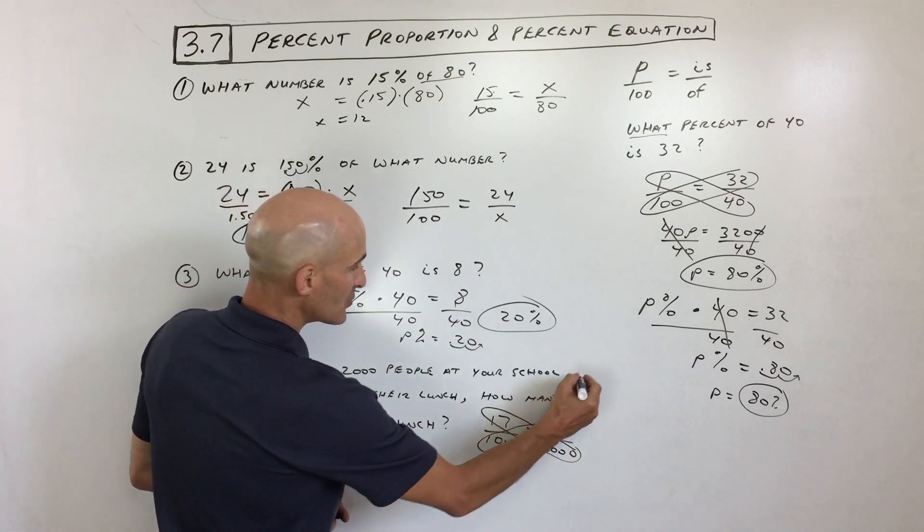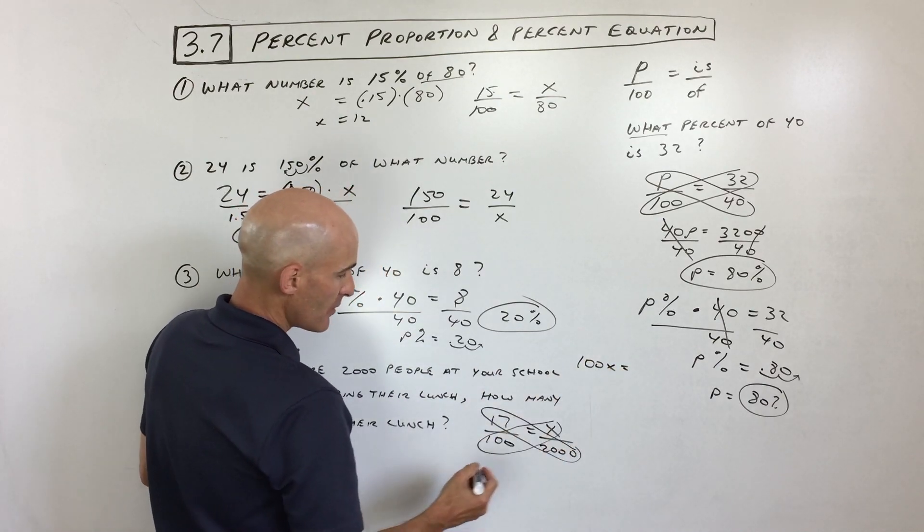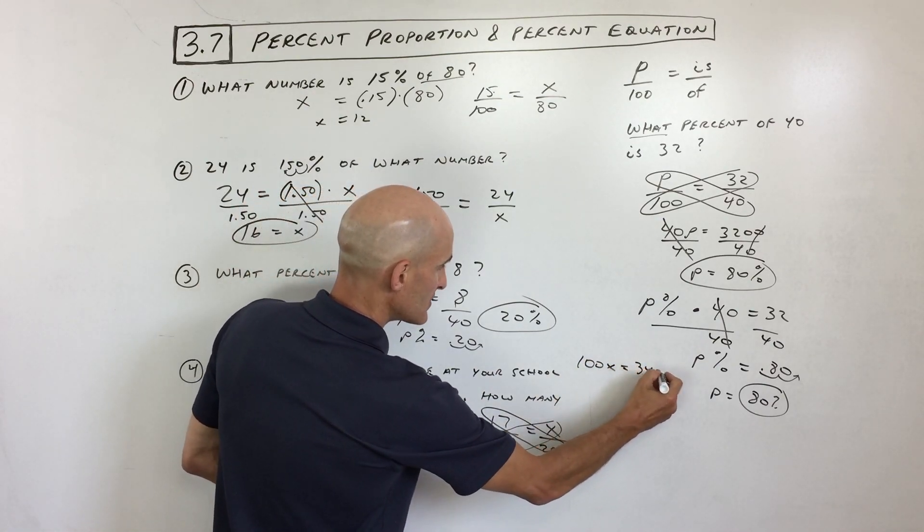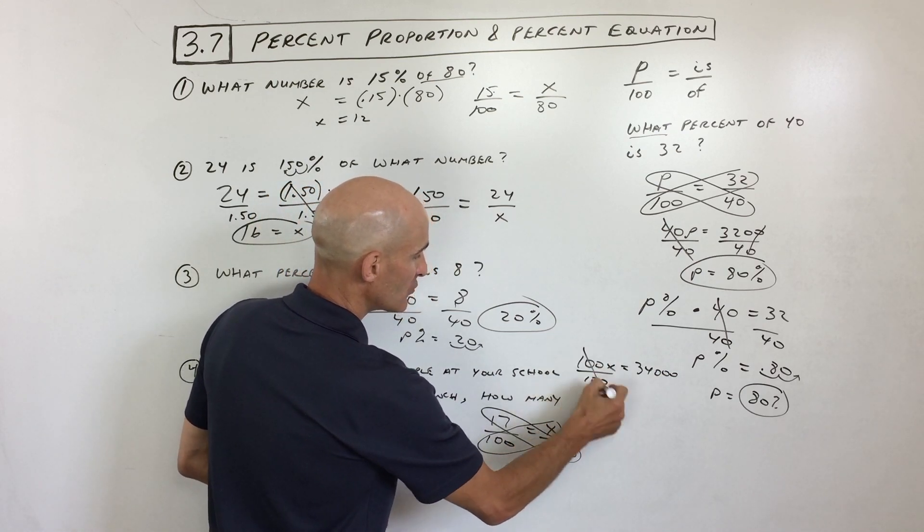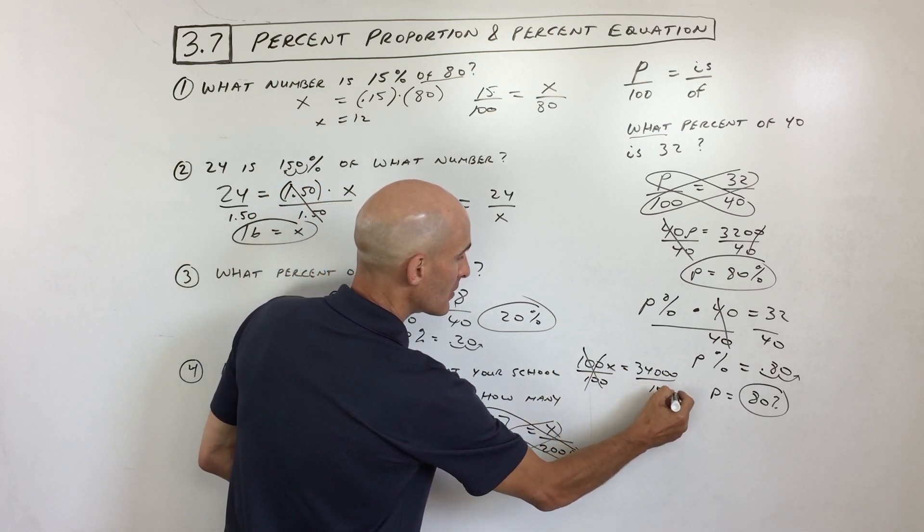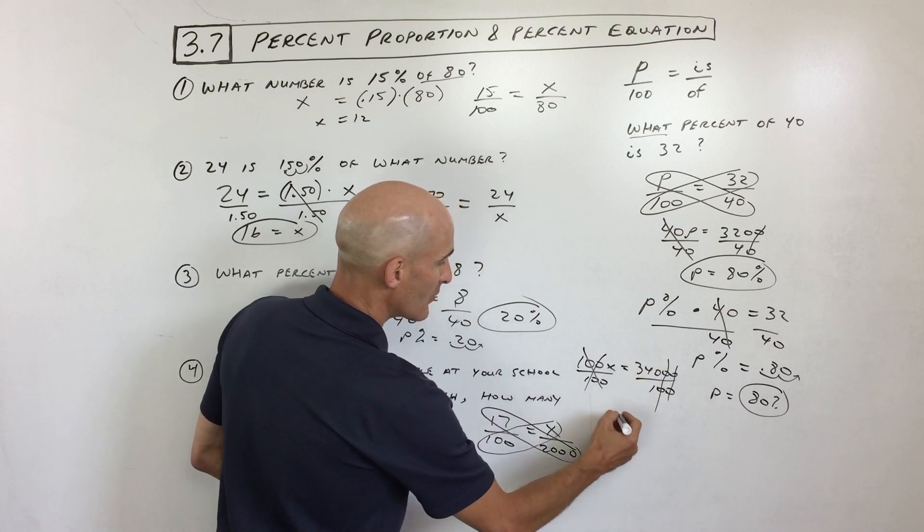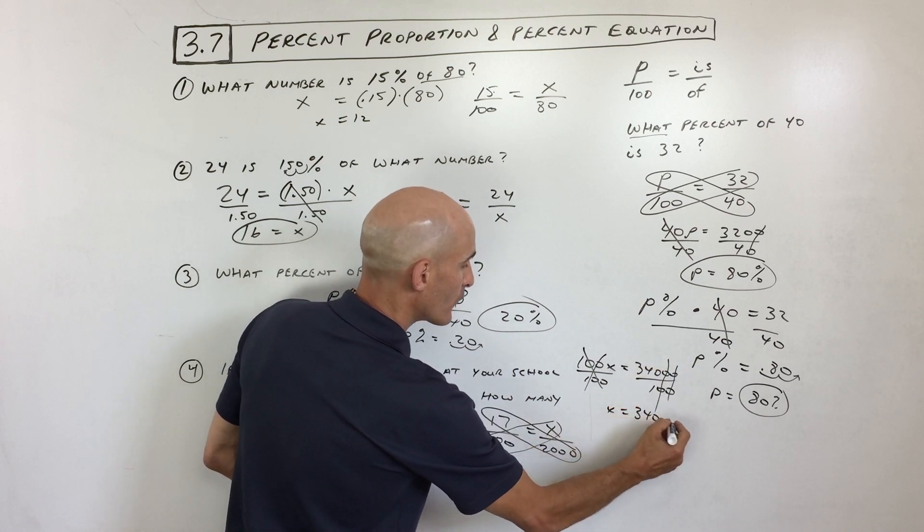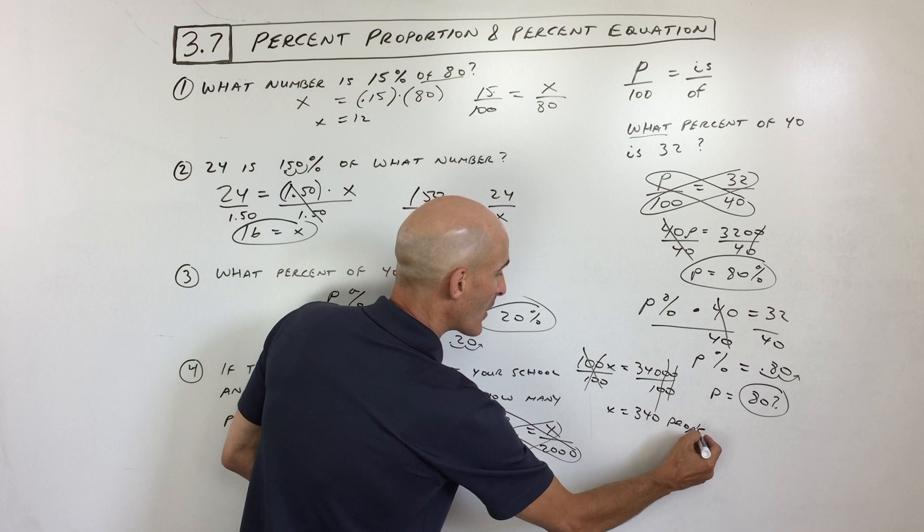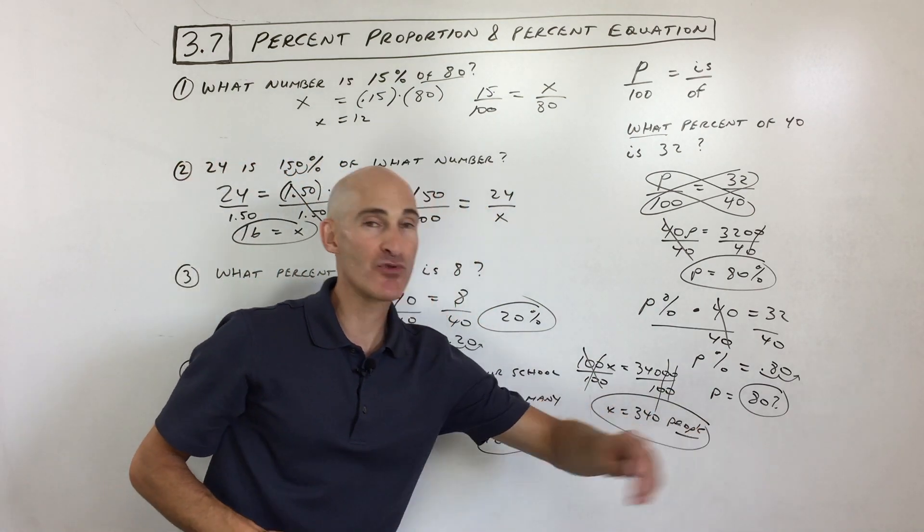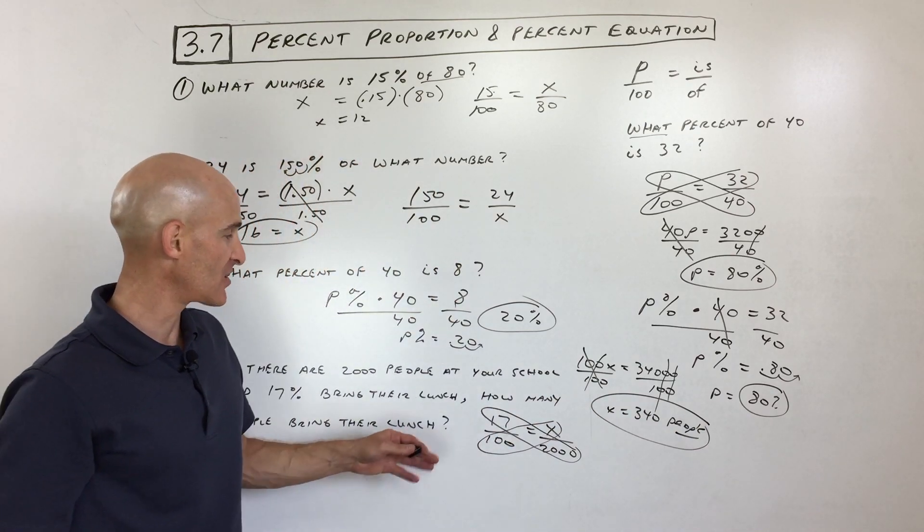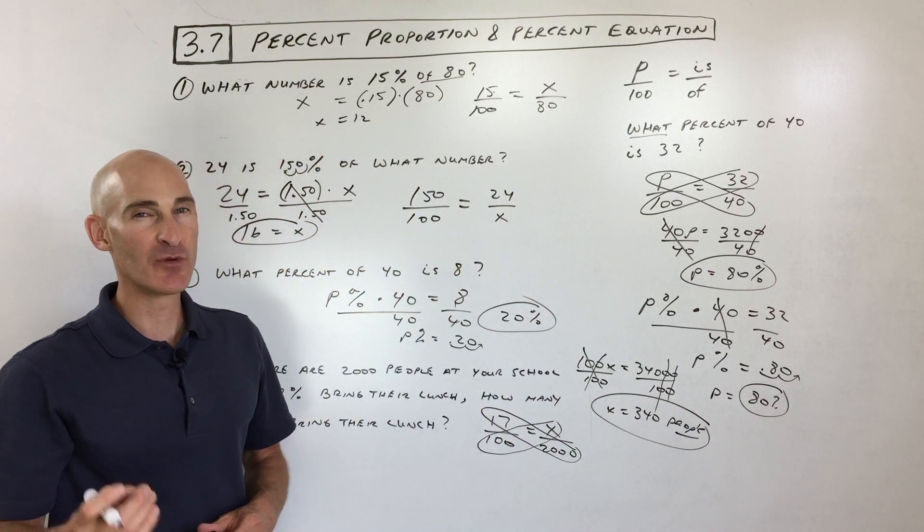So that comes out to, let's write it over here, 100x equals 34,000. Divide by 100, because we want to do the opposite of multiplying by 100. You can reduce this down. It comes out to 340 people. Remember, I want to put those units because it's a story problem. So 340 people. And I probably would write a sentence, bring their lunch to this particular school. That'd be a little bit better.